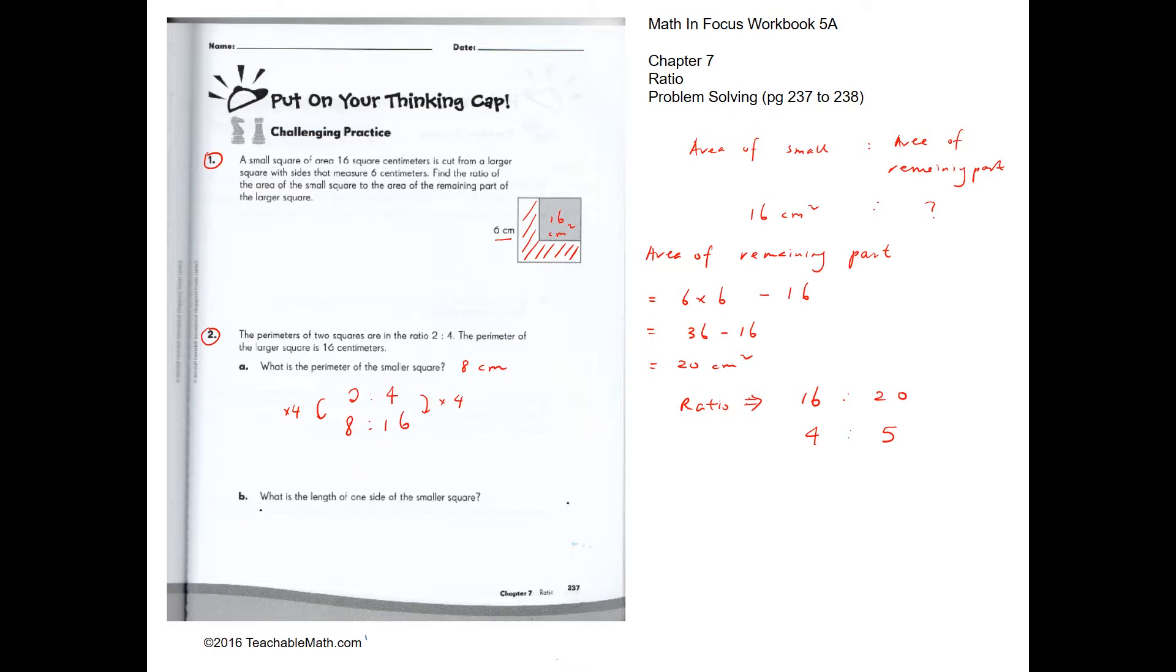What is the length of one side of the smaller square? So if the perimeter is 8, the length has to be 2, so that 2 plus 2 plus 2 plus 2 is 8. So the answer is 2 centimeters.